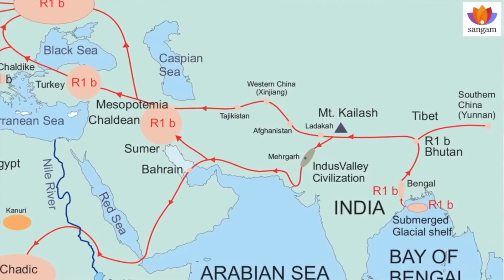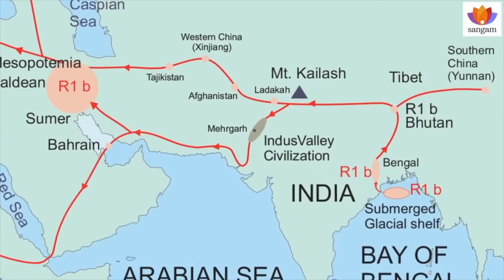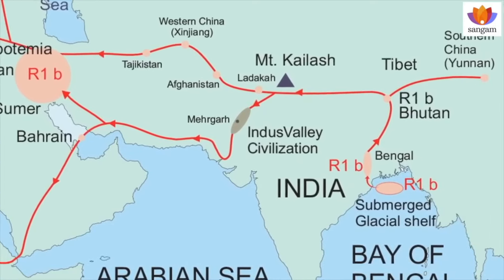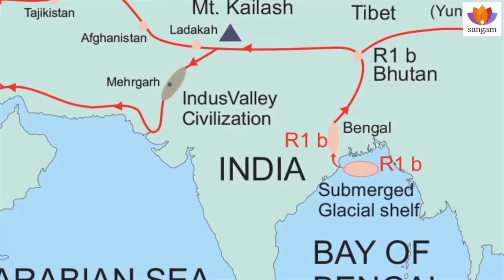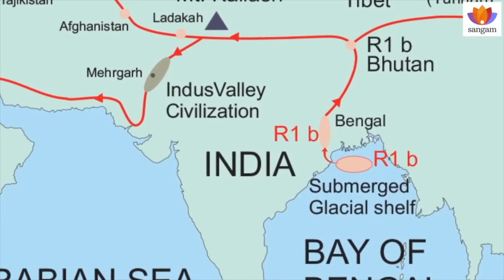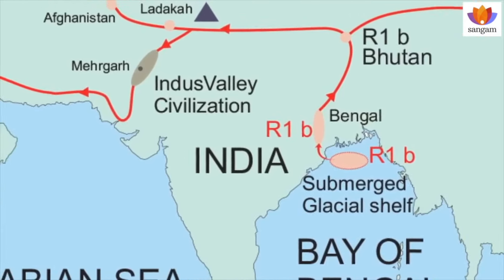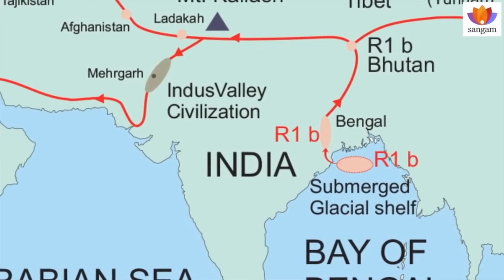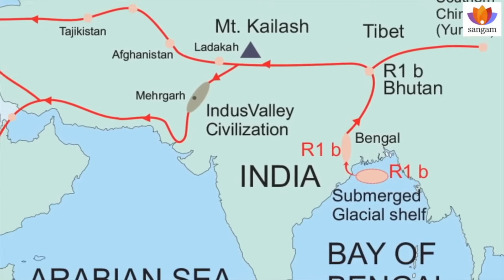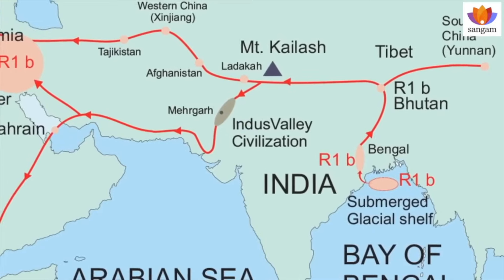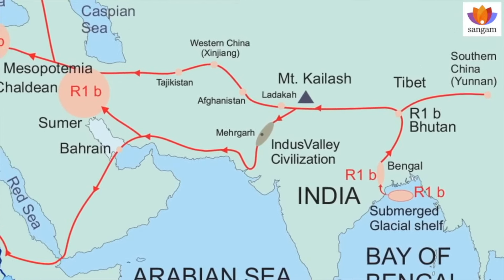It is extremely crucial to establish the site of origin of R1-alpha and R1-Bravo haplogroups in Y chromosome on the Bengal glacial coastal shelf during the last glacial period. That would provide us the direction of the migration of the post-glacial period anatomically modern human fraternities from east to west, which started 12,000 years ago.